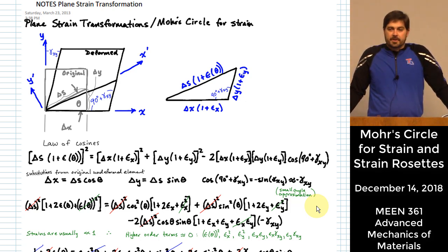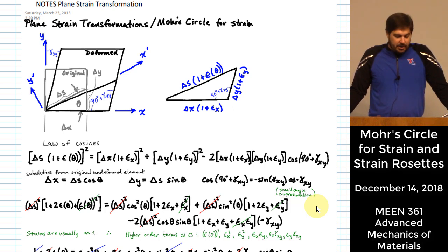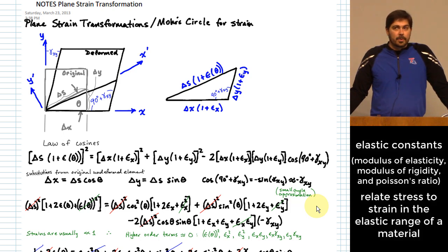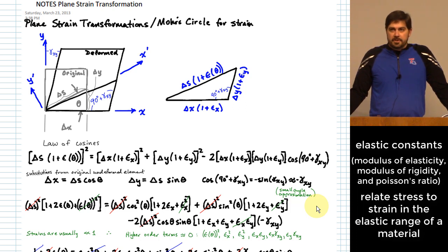In the study of mechanics and materials, we deal with stress and strain a lot. Stress has been the focus of recent lectures. Today I'll talk about strain, which deals with the deformation of a material rather than how close you are to breaking it. Stress and strain are related through elastic parameters: the modulus of elasticity, the modulus of rigidity, and Poisson's ratio. These parameters allow us to relate stress and strain based on material properties, which tend to be relatively constant for many materials.